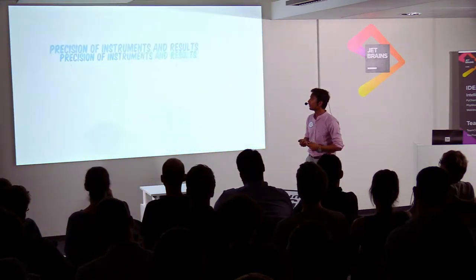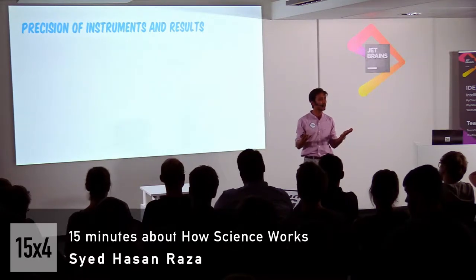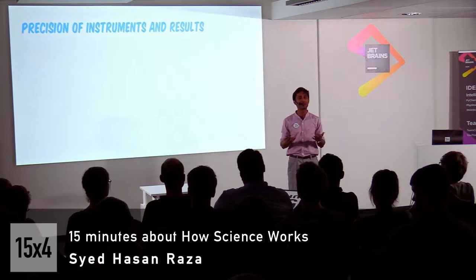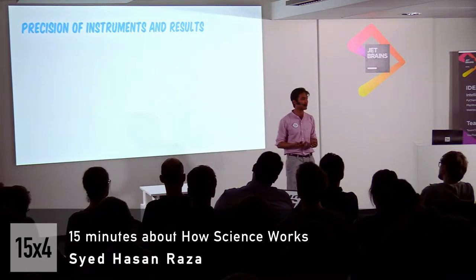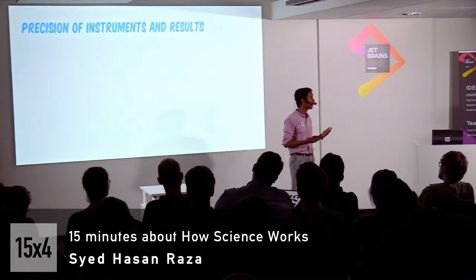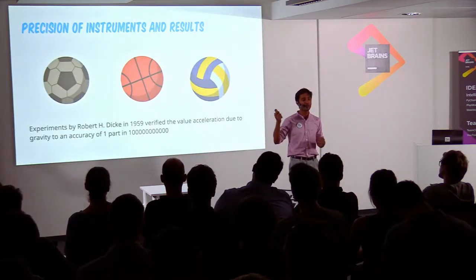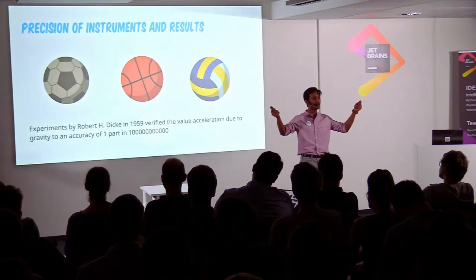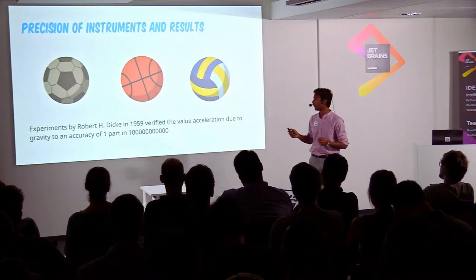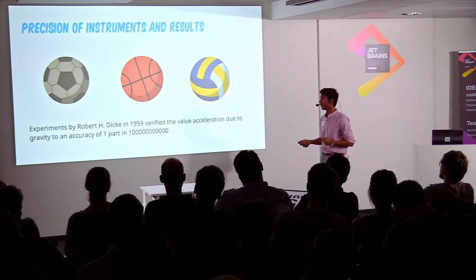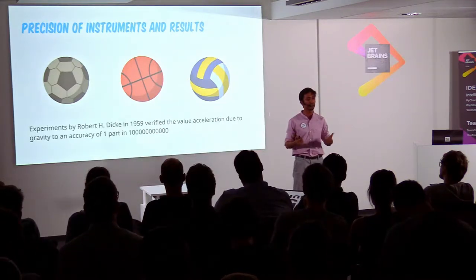The next part is precision of instruments and results. What we usually do in science is that once we have a hypothesis, we try to make our instruments and measurements as precise as possible so that we can make our hypothesis much stronger and promote it to a theory. This was done by Bouquet in 1959, when he demonstrated that by dropping various objects from different heights, he was able to calculate the acceleration to an accuracy of one part per 10⁹ — an extremely high accuracy — which basically tells us that the hypothesis for gravity is true.